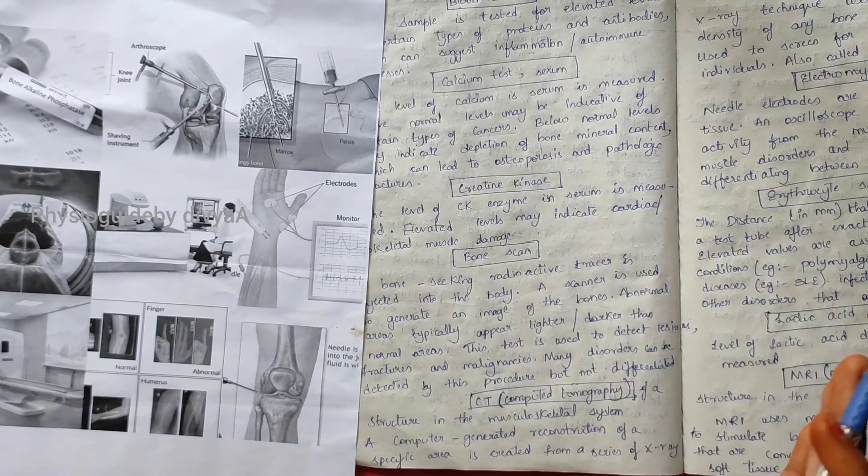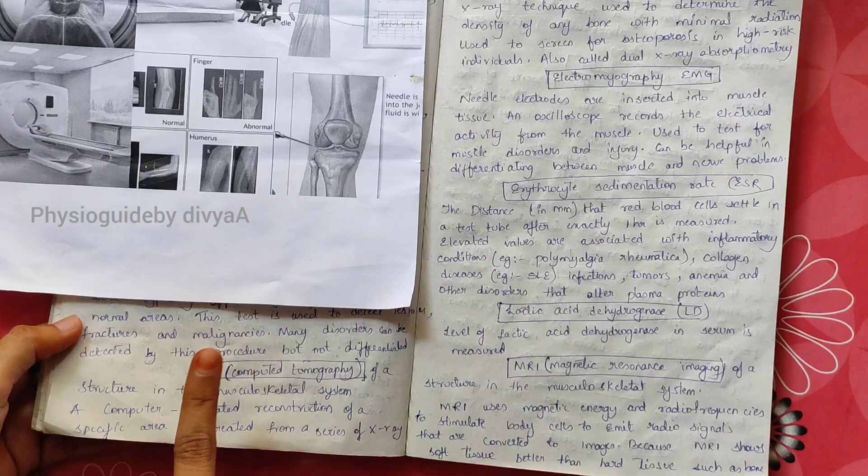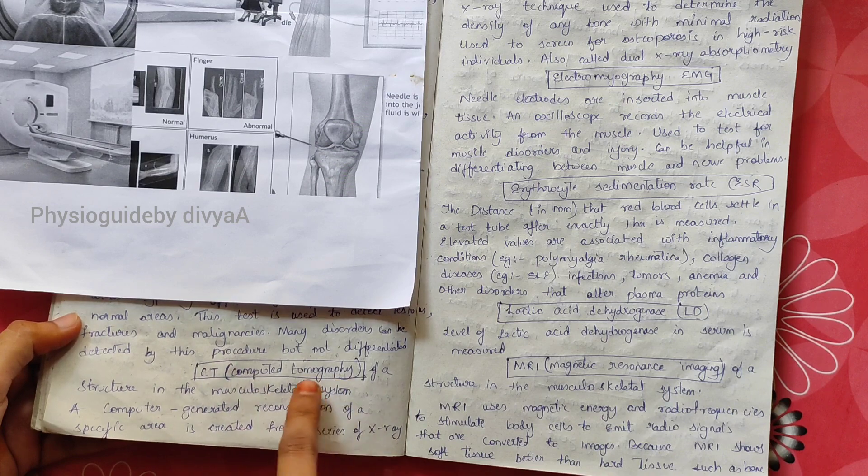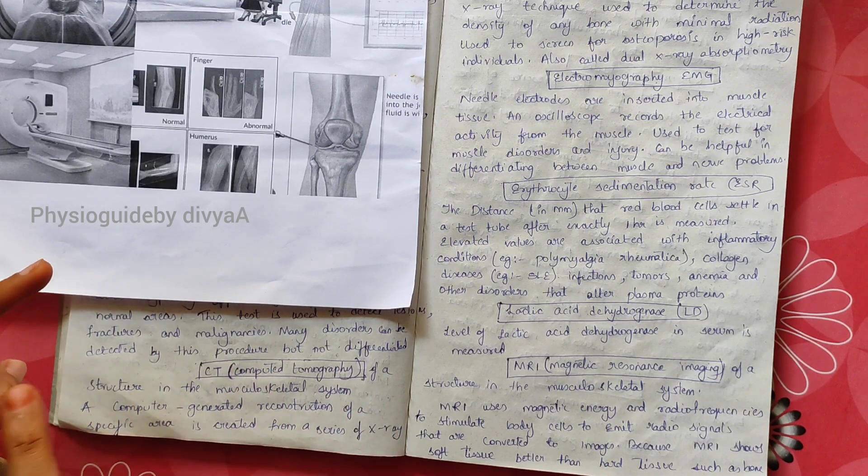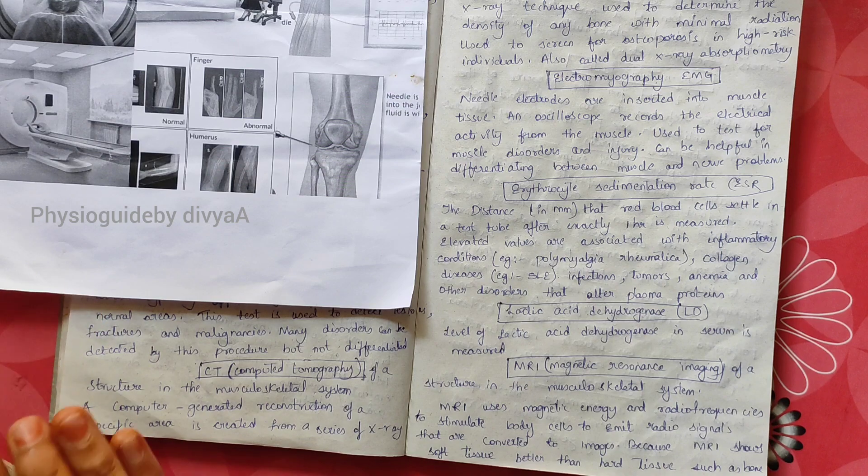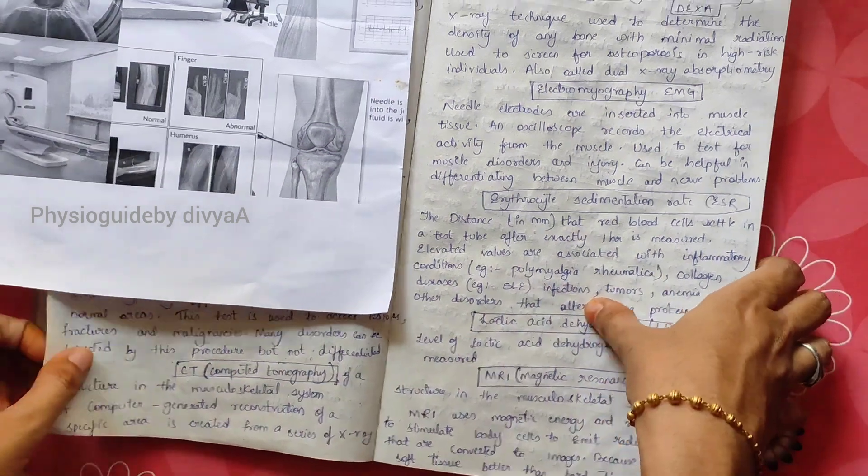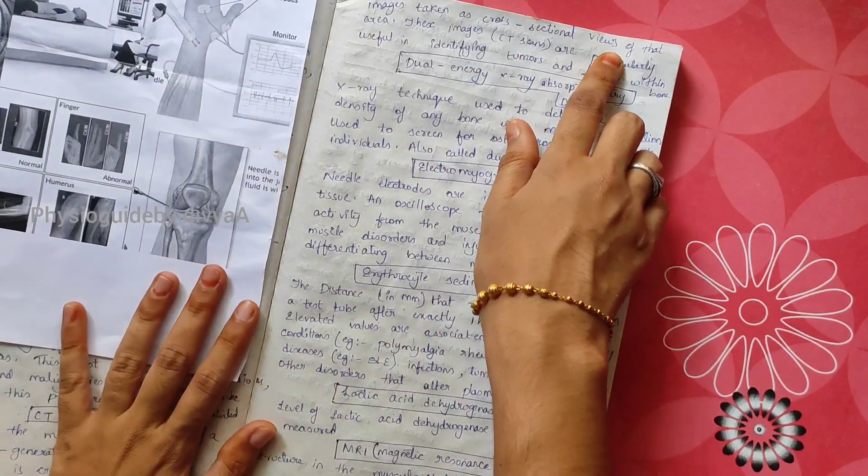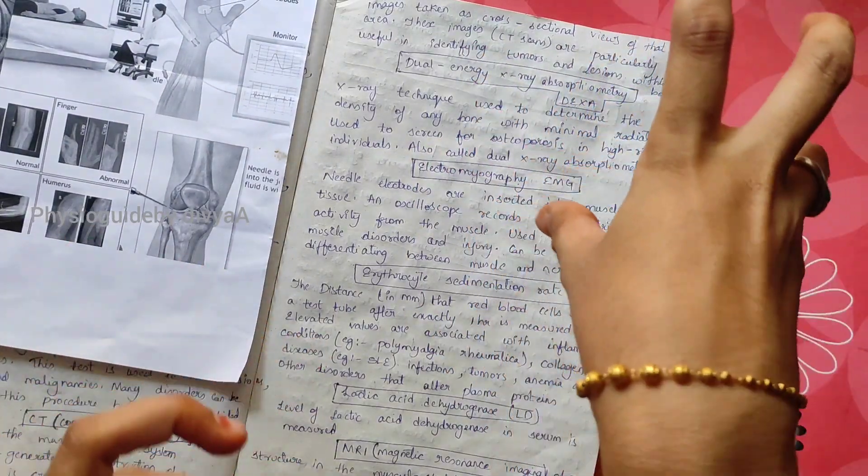CT scan, or computed tomography: a computer-generated reconstruction of a specific area is created from a series of X-ray images taken as cross-sectional views. These images are particularly useful in identifying tumors and lesions within bones.